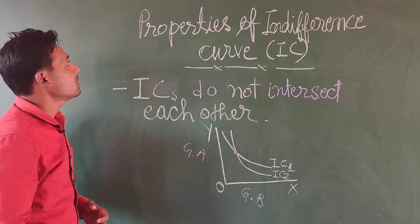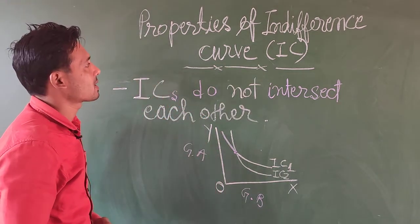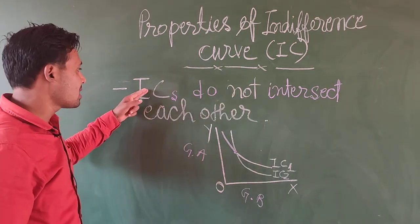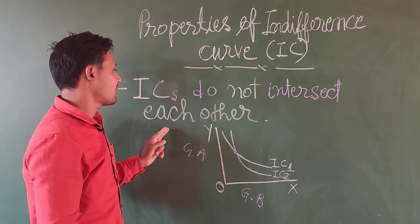Let us move with the property of indifference curve. Next one we have is ICs do not intersect each other.